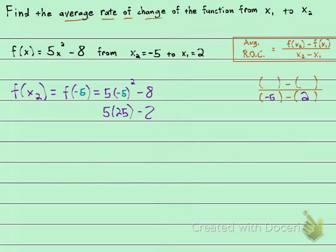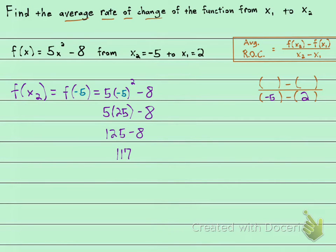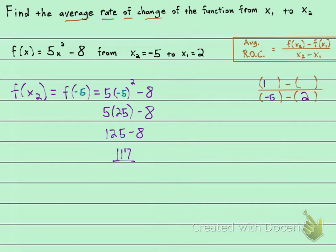Drop down the 5 and the minus 8. 5 times 25 is 125, minus 8. Using a calculator: 125 minus 8 is 117. So that is f of x sub 2 — I can put 117 in for f of x sub 2.